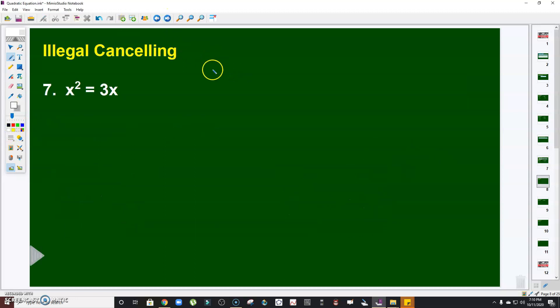Now, take note of this. I emphasize this. Illegal canceling. Normally, what we are doing here is just cancel x right away. By doing that, what will happen here is x = 3 only. Take note, there should be two answers as much as possible, right? Therefore, that's wrong. You cannot just divide, cancel x.